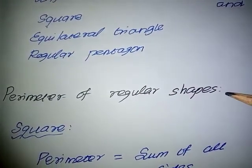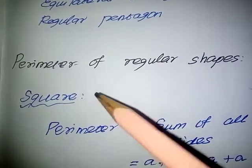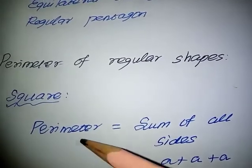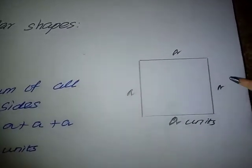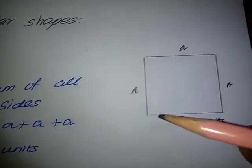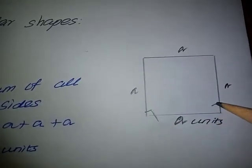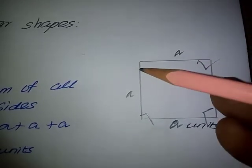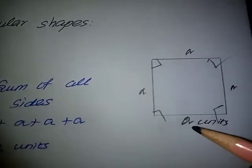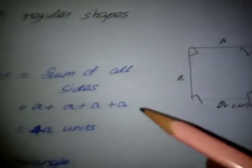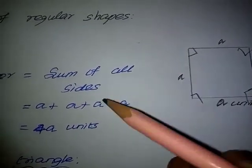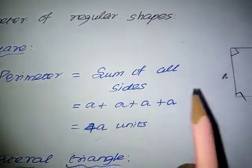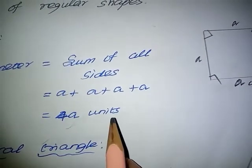Perimeter of regular shapes. Perimeter equals the sum of all sides. A square is a four-sided shape where all sides are equal and all angles are equal, so it is a regular shape. Therefore, perimeter equals A plus A plus A plus A — totally four sides — so the perimeter of a square equals 4A units.